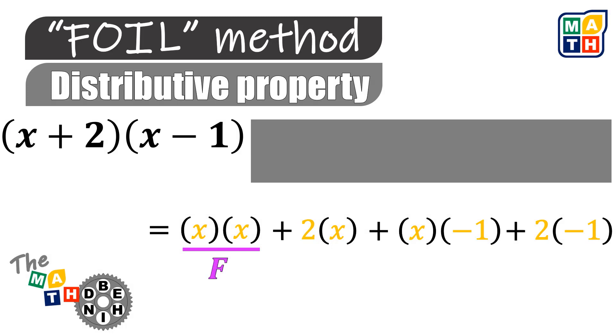Jumping to the third pair, we can see that it looks like we are multiplying the outer terms x and negative 1 of the given binomial expressions. The second pair of terms looks like taking the second term of the first binomial expression, 2, and the first term of the second binomial expression, x. And finally, the last pair of terms looks like the product of the two last terms of each binomial expression.